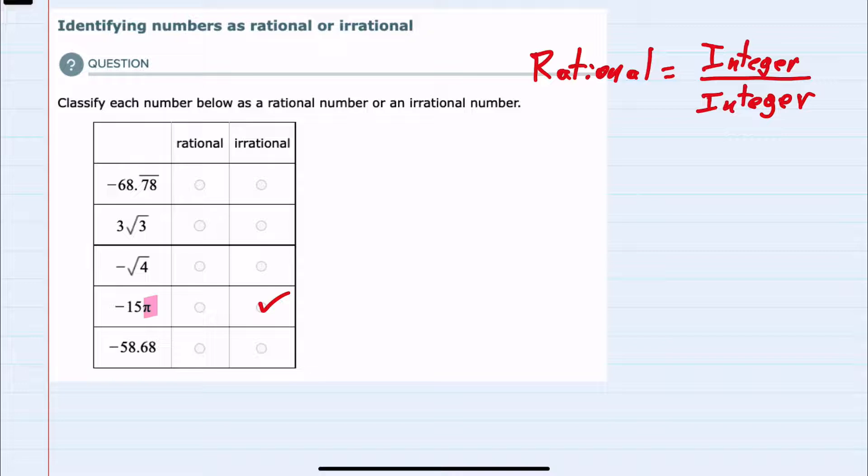The same is also true for square roots, unless the square root can be evaluated. So for example, the square root of 3 cannot be simplified, and square roots are irrational.